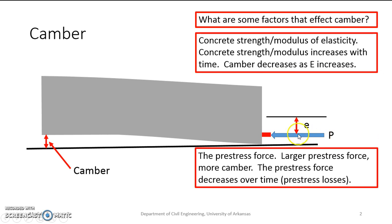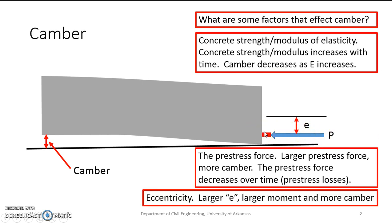Also, the larger the pre-stressing force here, the greater our camber. The larger the eccentricity, the greater the moment. Therefore, the greater the camber we have in our beams.